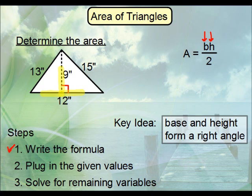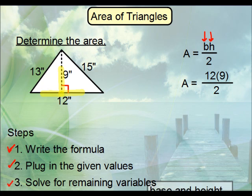We would plug in those two values. Now the only variable we have left is A, the area, so we can go ahead and solve for that by doing the arithmetic here. You can accomplish this by just simply multiplying across the top and then dividing by two, or reducing here first and then doing your multiplication. Either way gives you the same answer.